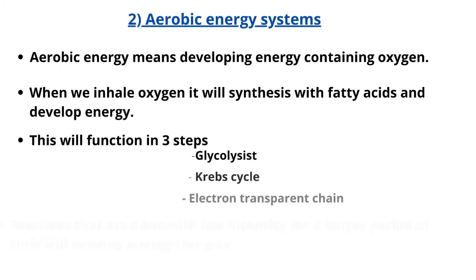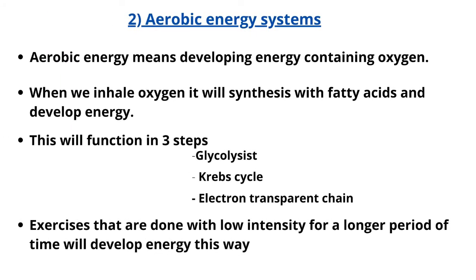At the beginning of any energy production, glucose transforms to energy under the glycolysis method. Afterwards, it goes through the Krebs cycle, using oxygen and fatty acids to develop energy. Thereafter, it enters an electron transport chain through ATP synthase, which develops energy for a long period of time uninterrupted.